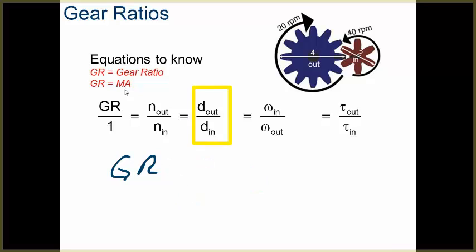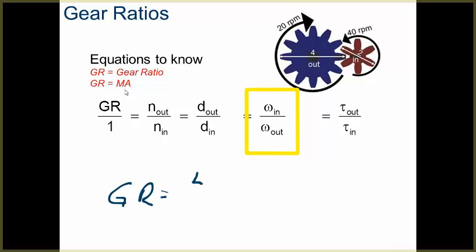I could also use my diameters. So if I use my diameters, it's the out gear's diameter over the input gear's diameter. Notice how I'm still getting a gear ratio of 2. If I wanted to use my speeds, my gear ratio is now my speed in, or the speed from the driver gear, to the speed of your driven gear. I'm still getting a ratio of 2.